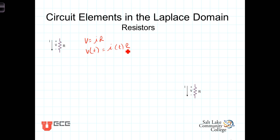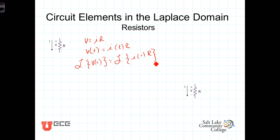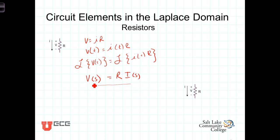Now let's take the Laplace transform of both sides. The Laplace transform of V of T will equal the Laplace transform of I of T times R. Of course, R is a constant so it comes out in front, and we're left with: the Laplace transform of V of T — that's capital V of S — is equal to R times the Laplace transform of I of T, which is I of S. So we see that in the Laplace domain, Ohm's law carries on exactly the same, where the voltage represented in its Laplace transform equals the constant resistance value times the current represented in its Laplace form.